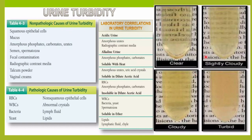There are non-pathological causes also. Like suppose agar urine mein mucus a gaya, though it may not be of any pathological cause, but still the urine becomes turbid. Agar urine mein vaginal creams, ya semen ya spermatozoa a gaya, then also the urine looks turbid. If there are amorphous phosphates, carbonates, urates, some mucus, or squamous epithelial cells which are normal from the skin — if they are getting excreted in this urine, then also you will have turbidity. Whenever you see the turbidity, you will have to correlate both pathological and non-pathological causes.